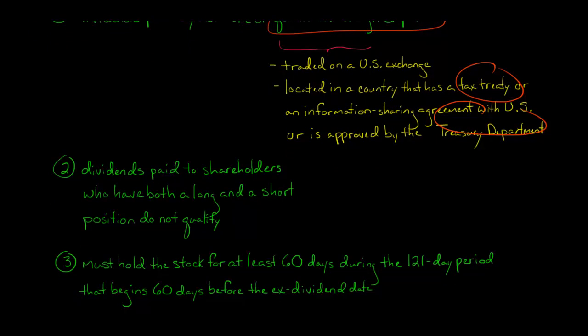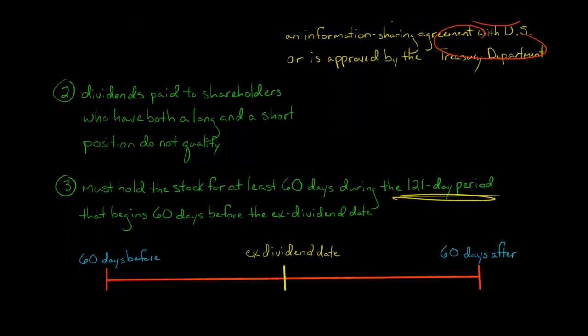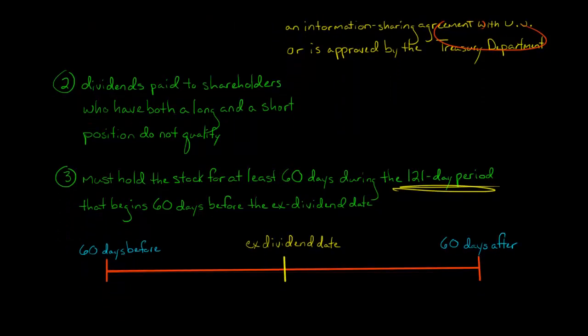In addition, you must hold the stock for at least 60 days during a certain 121-day period. Let me show you. I've got a little timeline here. The ex-dividend date is the date when a company says anyone who holds the shares during this time period is going to get a dividend. When a stock goes ex-dividend, if you buy on that date, you're not going to be entitled to a dividend.